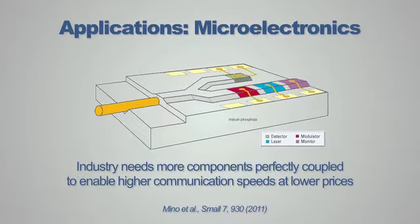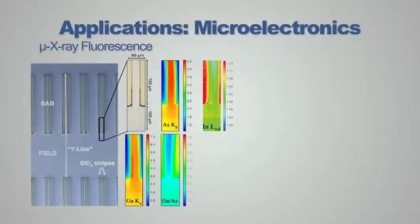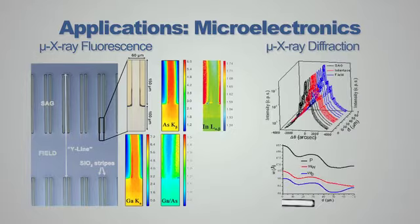The semiconductor industry needs to couple different devices in a single chip. For instance, for optical fiber communications at higher speeds and lower price, they want to couple a modulator and a laser in a single chip. To check whether the formation of this chip is correct, we have been working on the x-ray fluorescent analysis of the wafer. X-ray fluorescent maps allow us to study the spatial variation of indium, gallium, and arsenic elements across the wafer, while x-ray diffraction patterns collected simultaneously allow us to study the structural order for both devices and the formation of both modulator and laser at the same time.